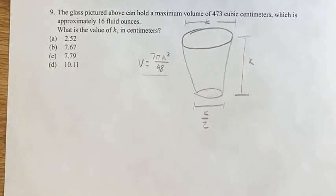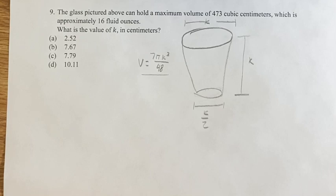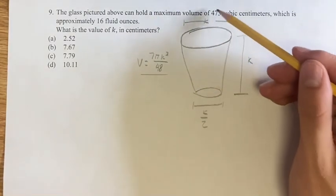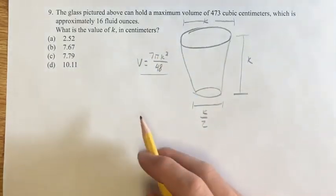Well, they just give you the volume formula right there. You're not expected to know this. And if we're told that the maximum volume is 473, all we have to do is plug in 473 into V.